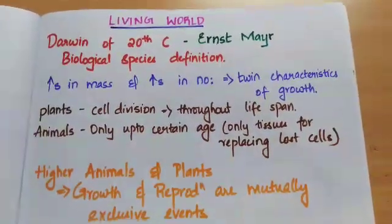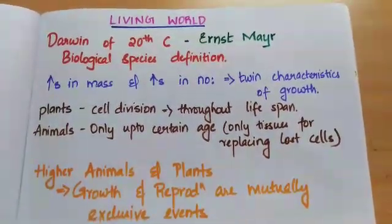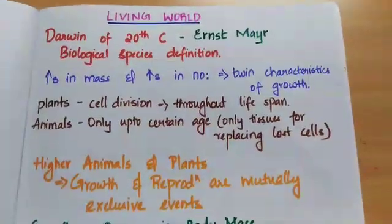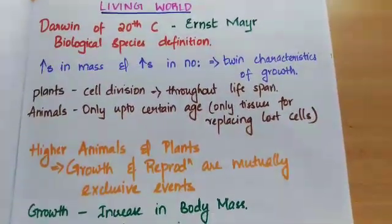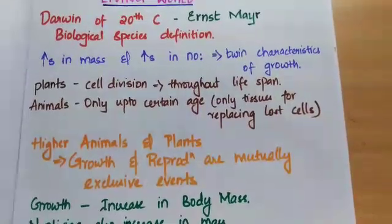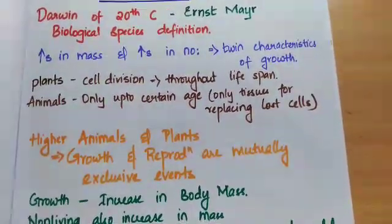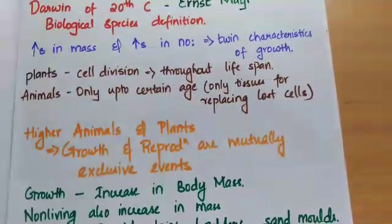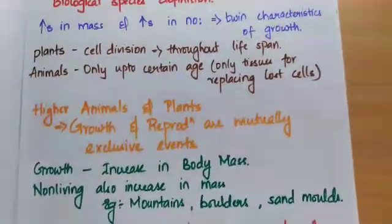Increase in mass and increase in number are considered as twin characteristics of growth. In plants, cell division is present throughout their lifespan, and in animals, it is only up to a certain age. There are certain tissues for replacing the lost cells.